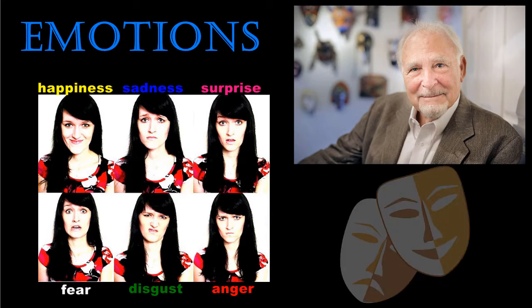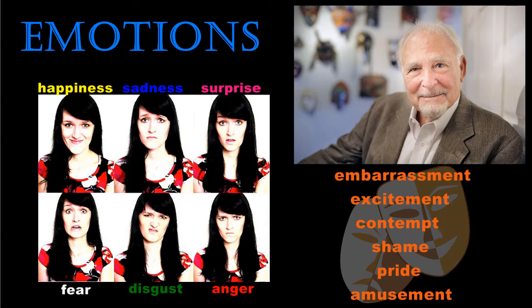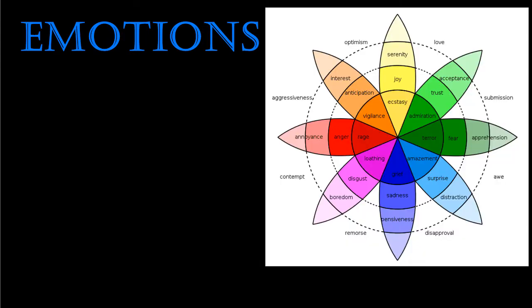Ekman later added to the list of emotions in 1999 to include such feelings as embarrassment, excitement, contempt, shame, pride, and amusement, although he suggested that these additional emotions could not necessarily be encoded in facial expressions.